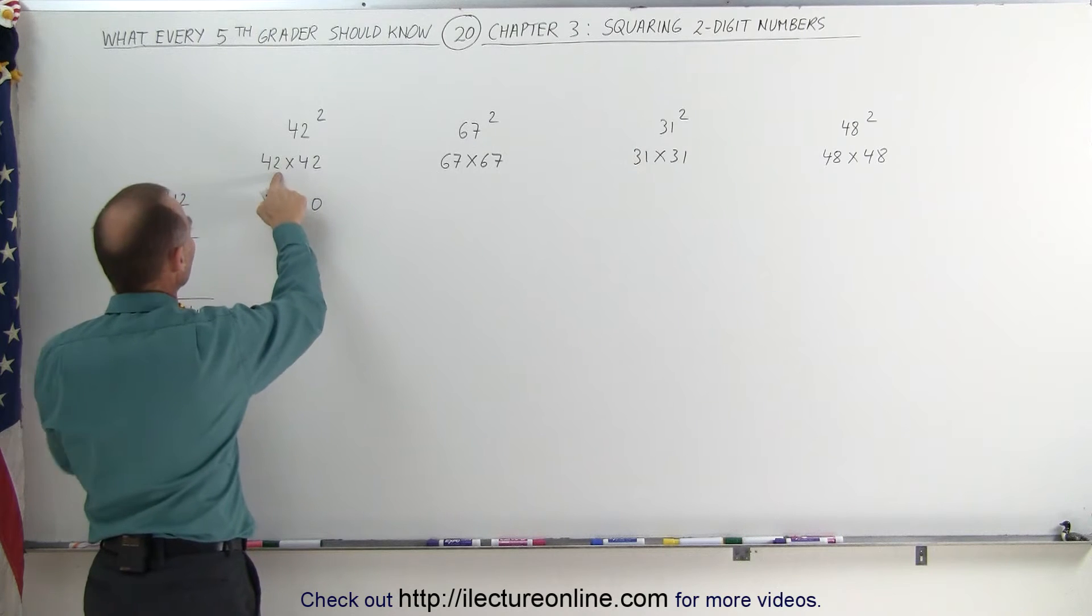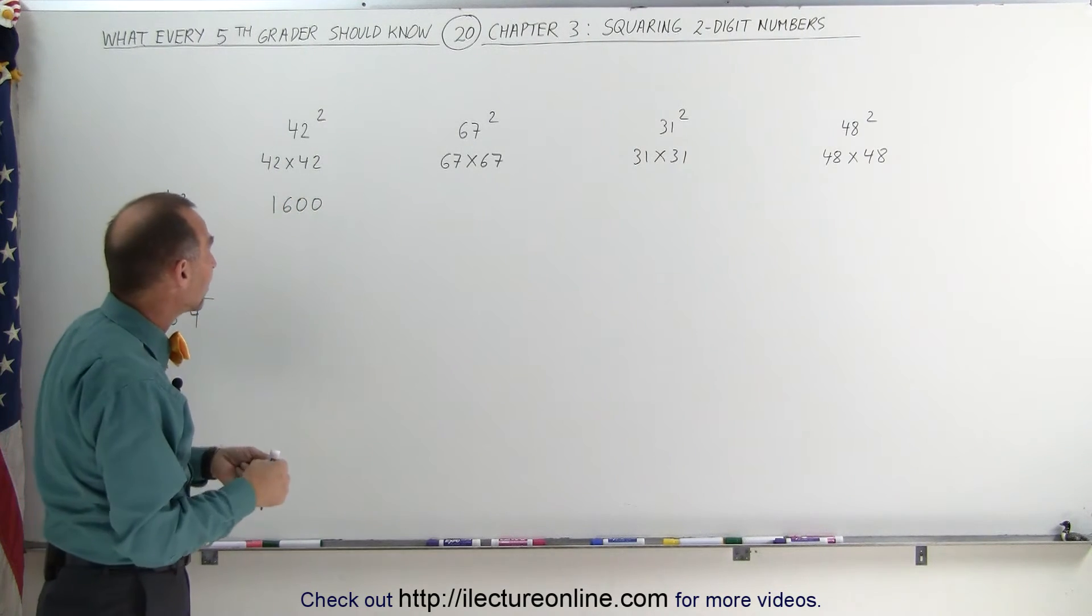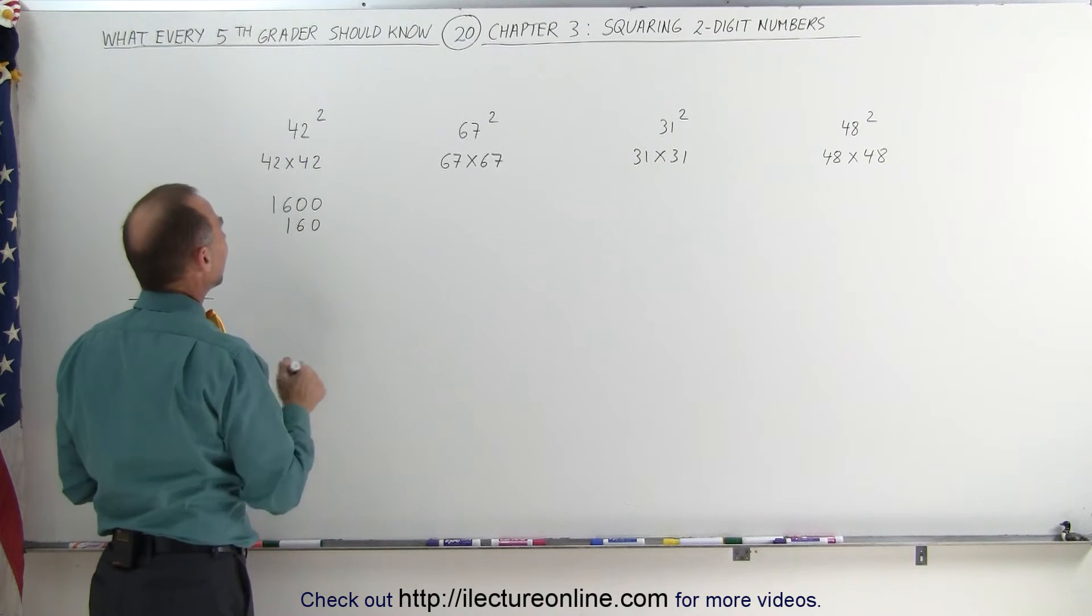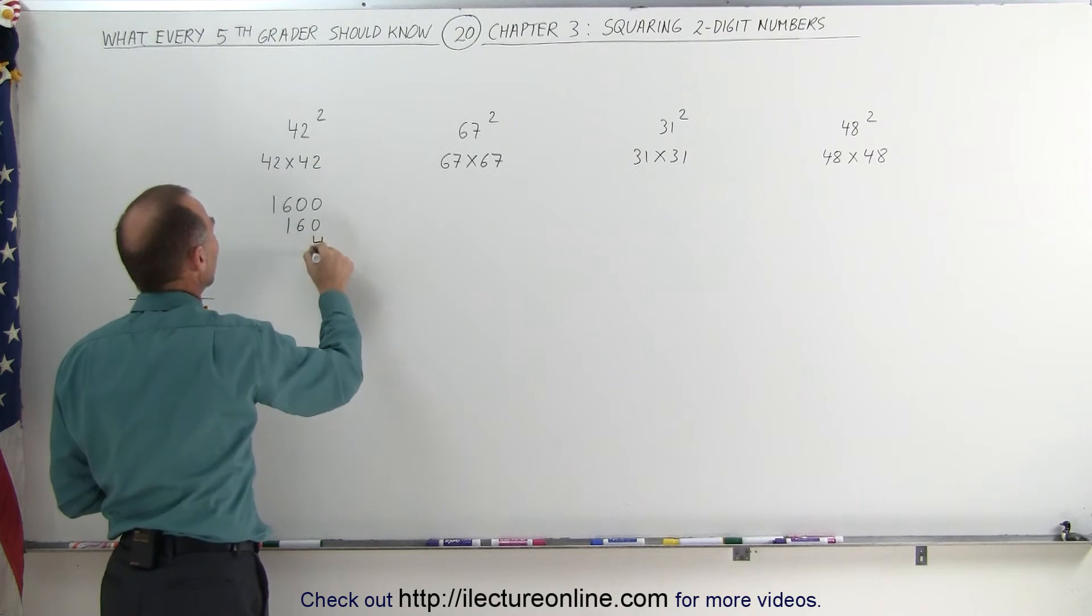Then you multiply the two numbers together. 2 times 4, and double that. 2 times 4 is 8. Double that is 16. Add a zero, you get 160. And then you multiply the last two numbers together. 2 times 4, which gives you a 4.